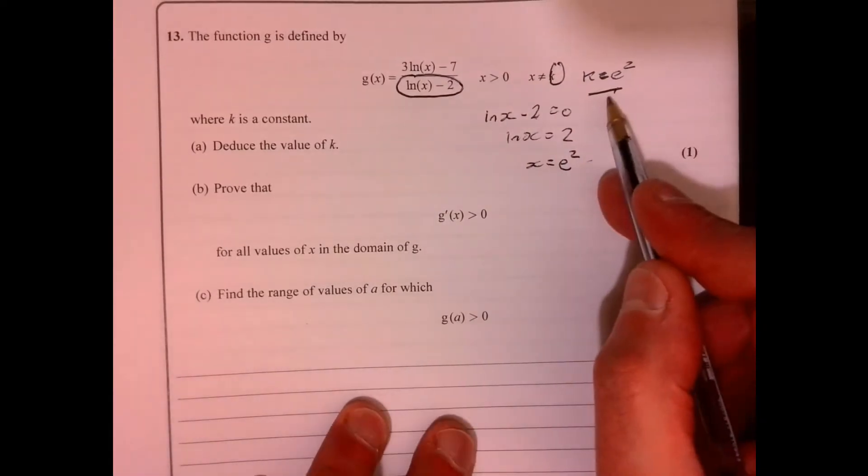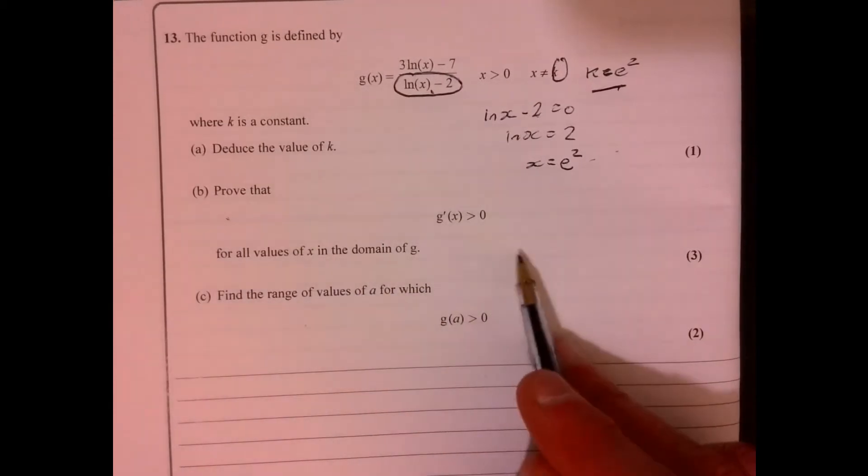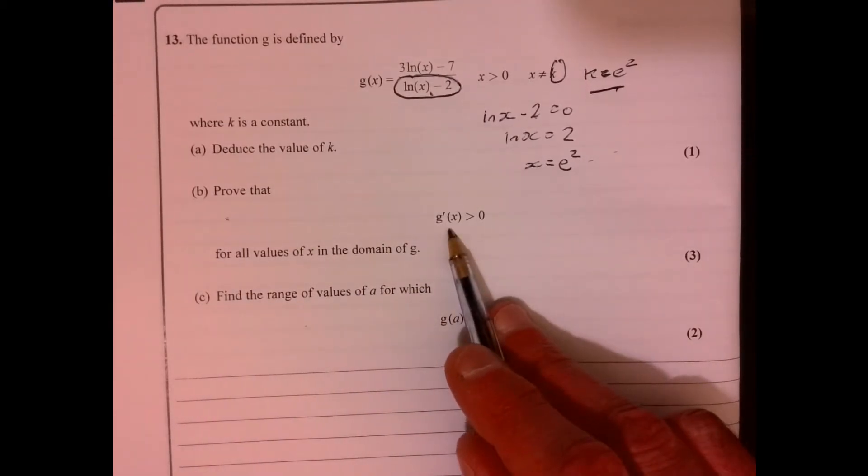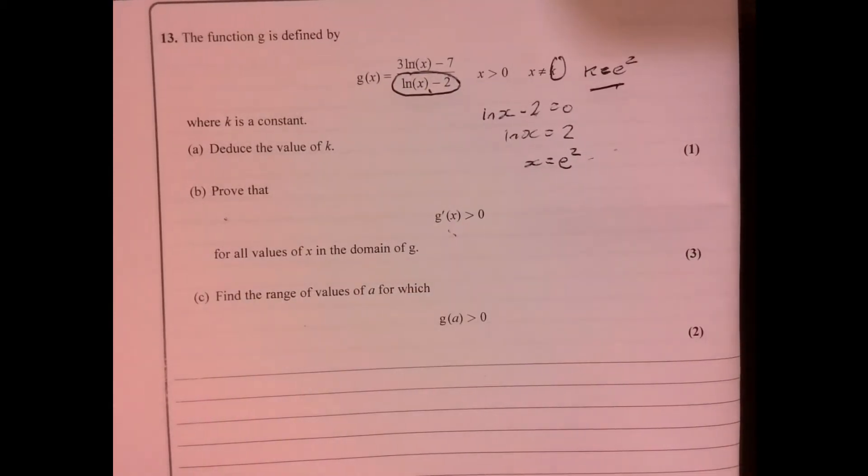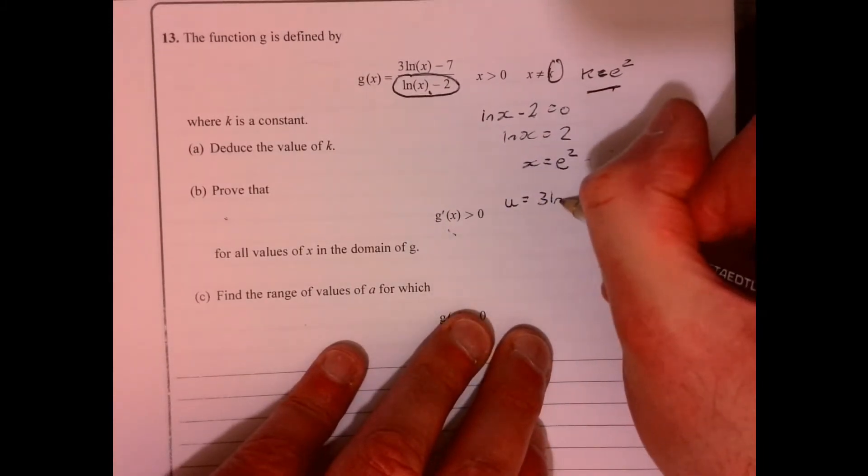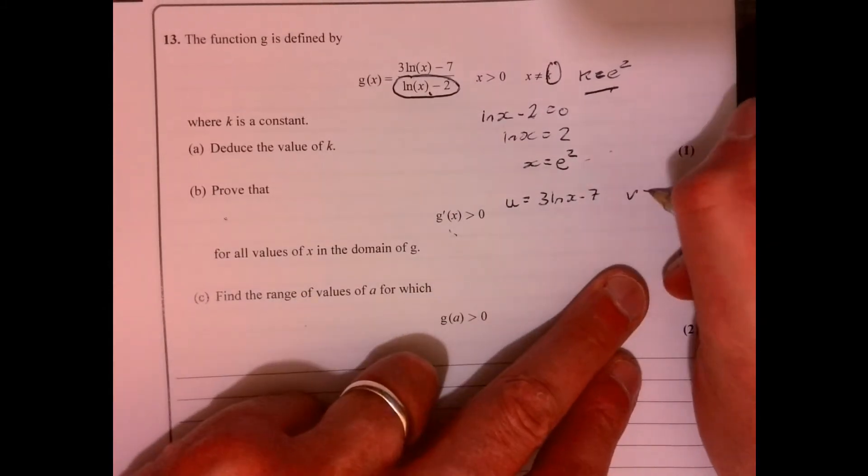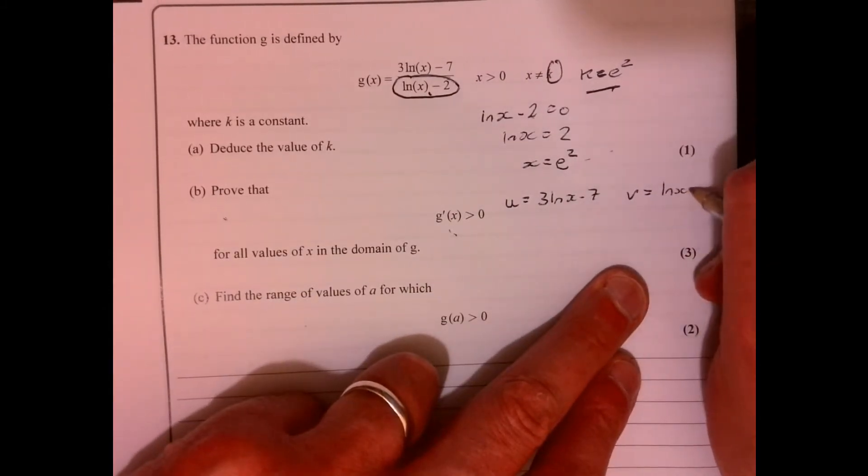Because we don't want it to be that, because that would make that 0. Part b. Well, that's telling me to differentiate. So we've got to differentiate this. So it's quotient rule, isn't it? So u equals 3 ln x minus 7. v equals ln x minus 2.